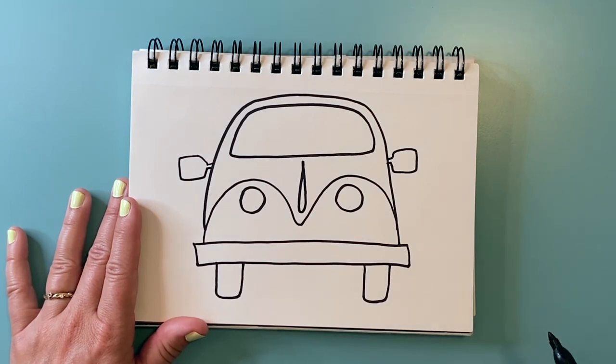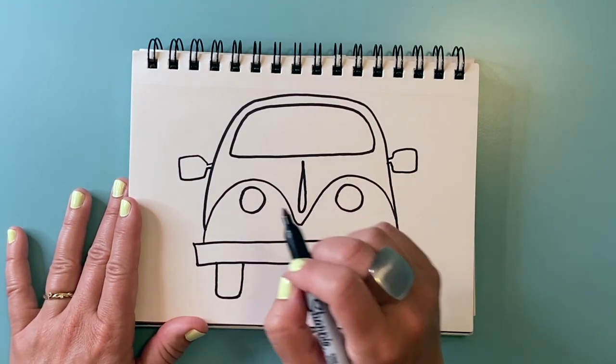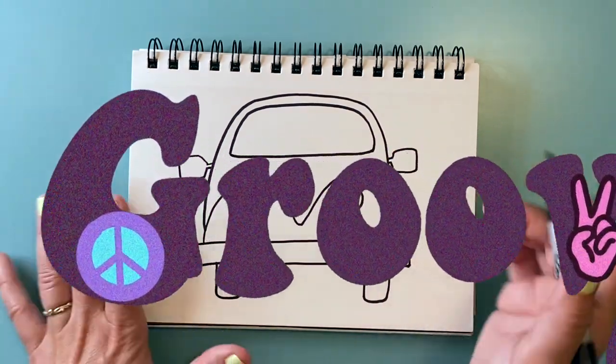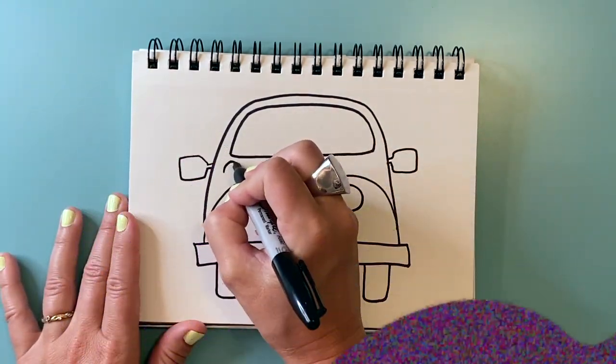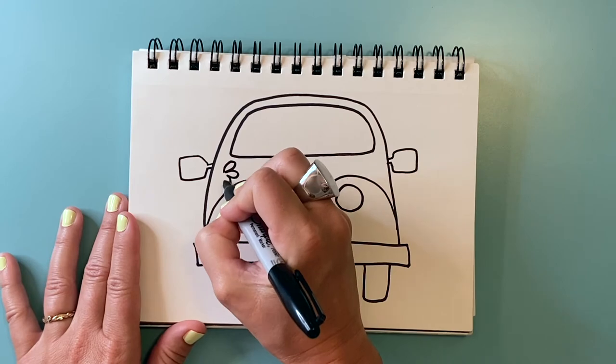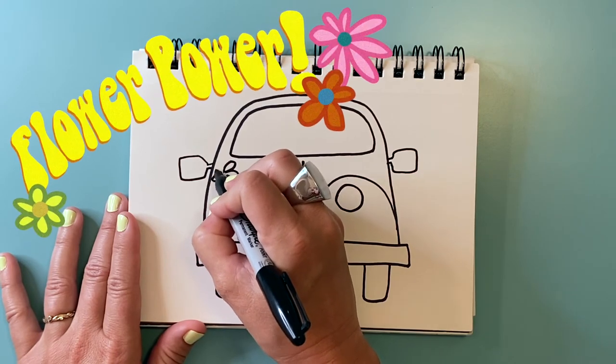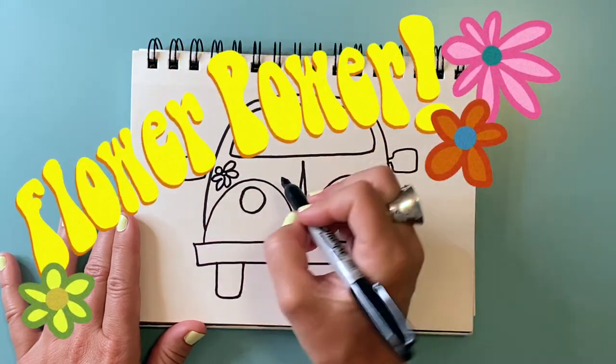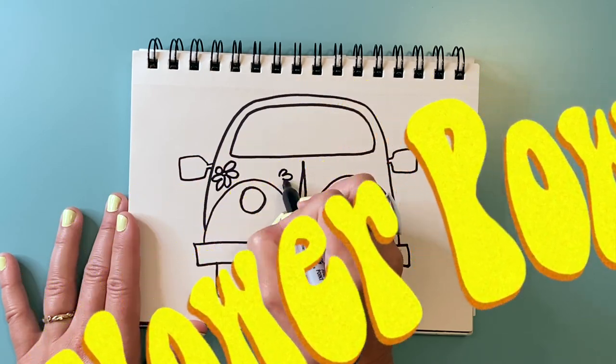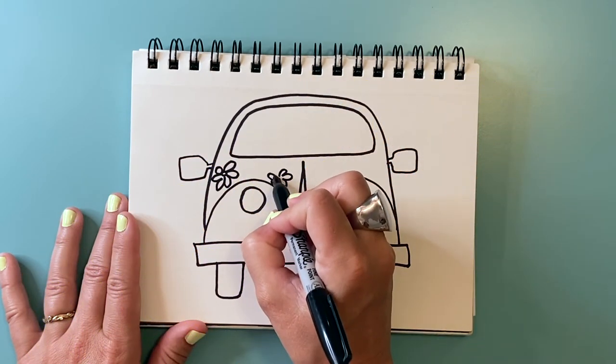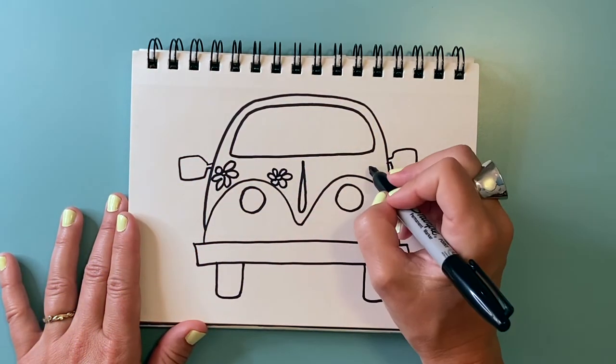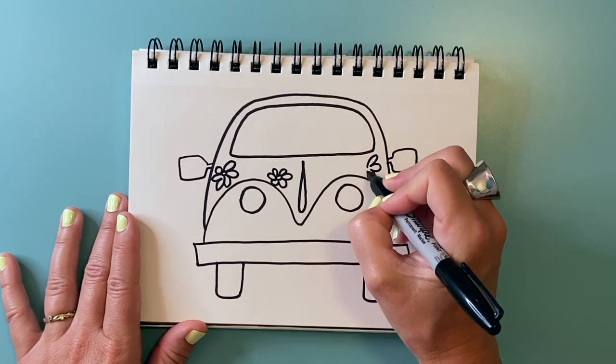And then we can add some details that make it look really groovy. So I'm gonna make some flowers for flower power. And I'm gonna put some flowers over here too, on the hood of my VW bug.